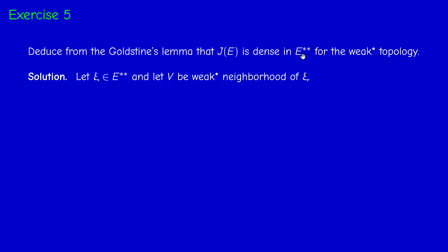How do we prove that? We take an element psi in the bidual and prove that it is in the closure. We use proposition 0.3, which tells us that this happens if every neighborhood of psi meets J of E. So we consider an arbitrary neighborhood V in the weak-star topology of psi and prove that it intersects J of E.